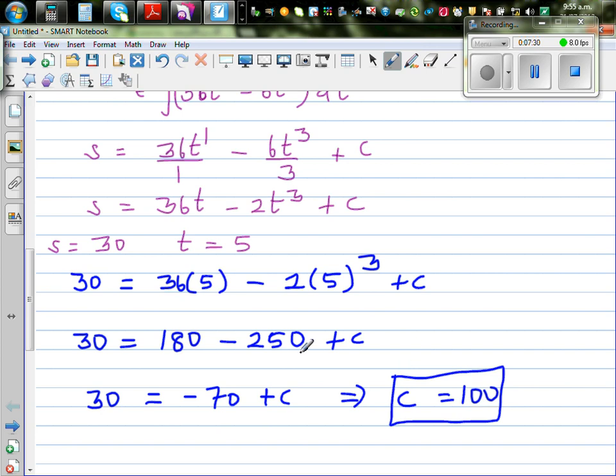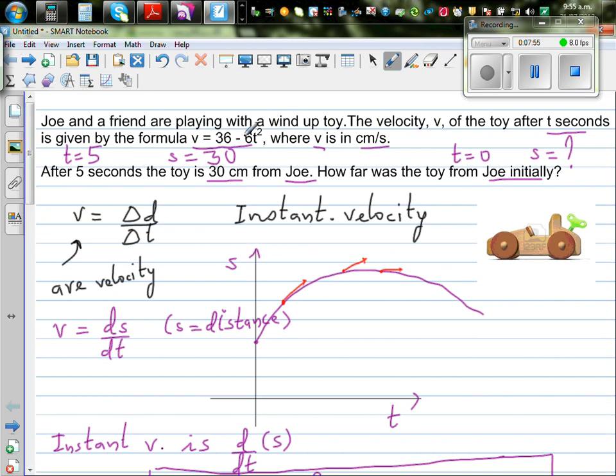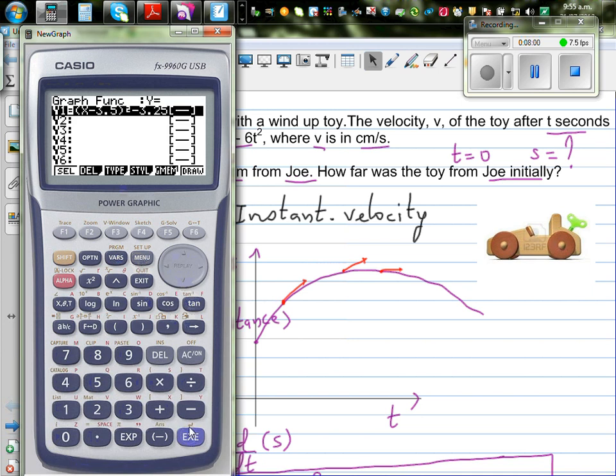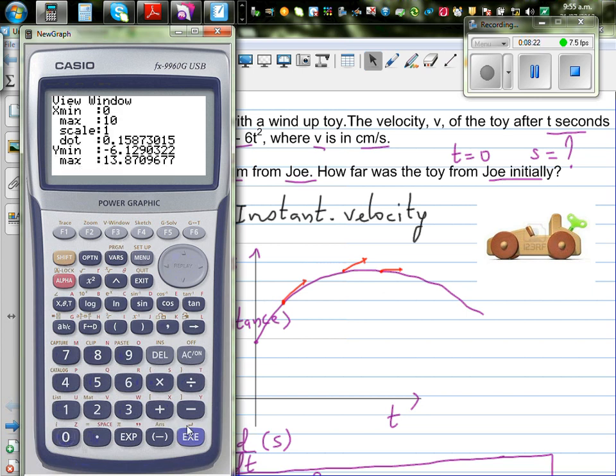So your function of S with respect to time is 36t minus 2t cubed plus 100. So let me show this in a bit graphical way. Let's understand first this equation, the equation of velocity. Let's go to graph and type in this equation, which is 36 minus 6x squared.